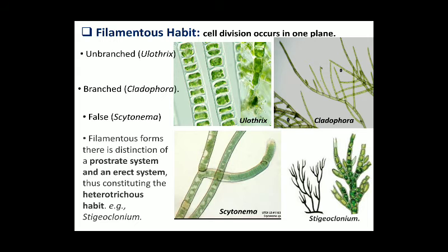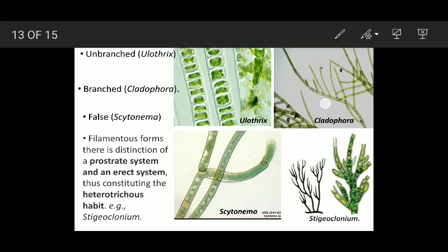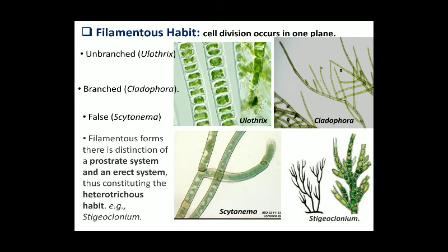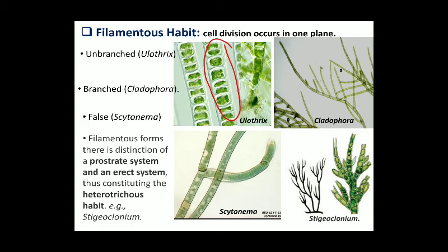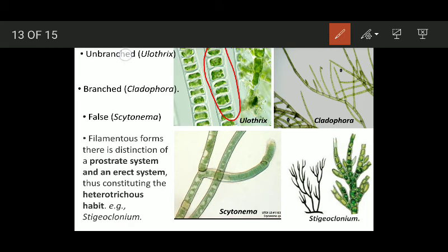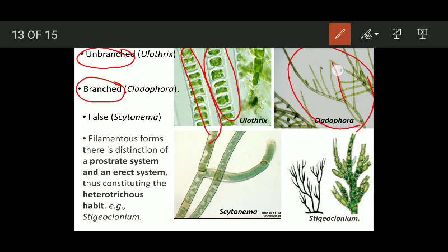Filamentous algae are those algae whose bodies are thread-like, having thread-like appearances. This habit comes into being when the cells divide in only one plane, resulting in the formation of long filamentous, thread-like structures. Under this category we have two main types: unbranched filaments and branched filaments. Unbranched filaments are simple, with no side branches — the example is Oedogonium.